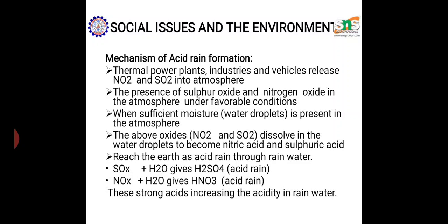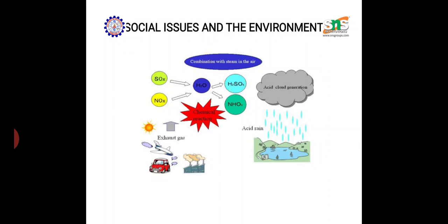These oxides — NO2 and SO2 — in the atmosphere are mainly due to exhaust from thermal power plants, industries, and vehicles. The presence of these oxides is unfavorable for the atmosphere. When water droplets form, SOx and NOx combine with H2O to produce sulfuric acid and nitric acid, making the rainwater more acidic.